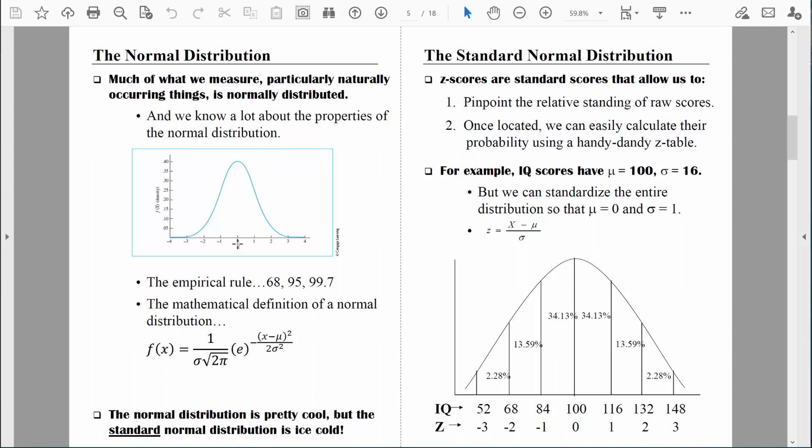Within three standard deviations above and below the mean, about 99.7% of all scores will fall. Again, that helps us with probability. Because we can ask ourselves, what's the probability that someone would score more than three standard deviations above the mean on an intelligence test? Well, the probability of that occurring just by chance is very, very low. It would be unlikely to occur just by chance.